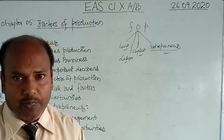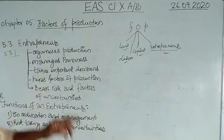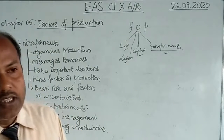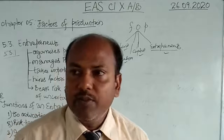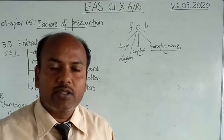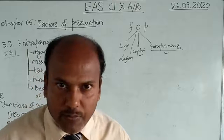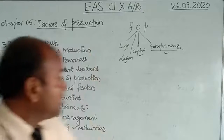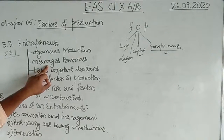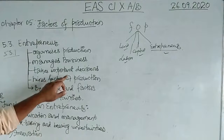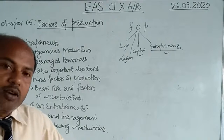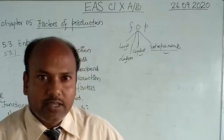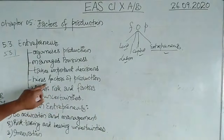The entrepreneur coordinates all other factors of production and manages the business — looking after whether the business requires an important decision and taking it. If the business needs important factors or materials, he has to make arrangements. He takes important decisions regarding how much to produce, how long to produce, at what price it should be sold, and where commodities should be sent.